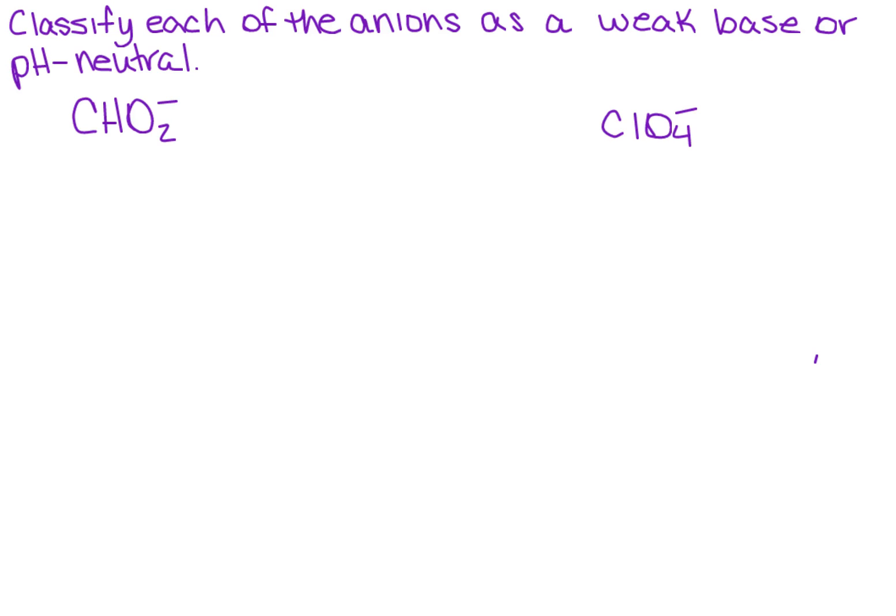We want to classify each of the anions as a weak base or pH neutral. So what's the easiest way to do this? Well, for most people, if you add the hydrogen to it, you need to determine if it makes a strong or a weak acid.